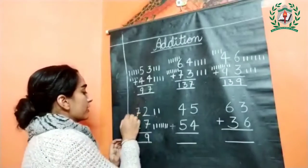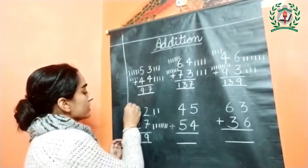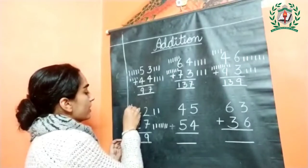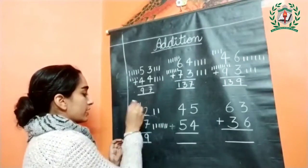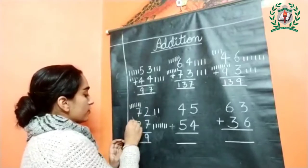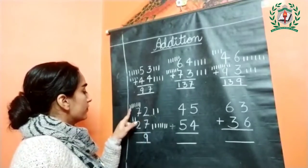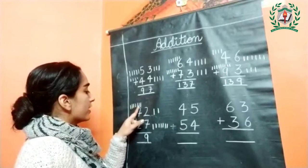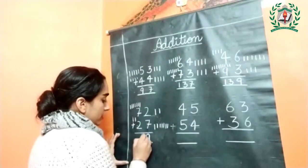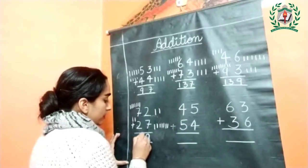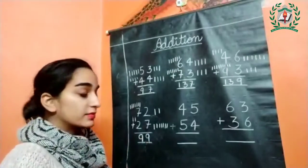Next, number seven — draw seven lines: one, two, three, four, five, six, and seven. This is two. Now add them together: one, two, three, four, five, six, seven, eight, and nine. Total number is ninety-nine.